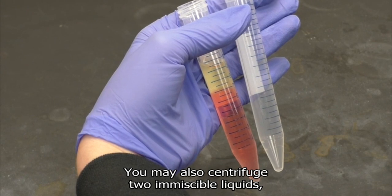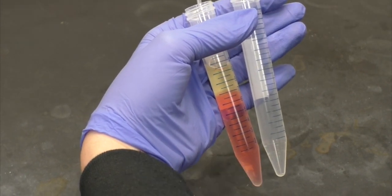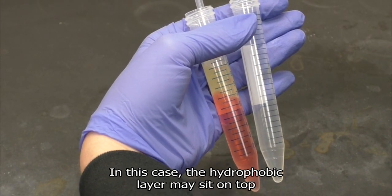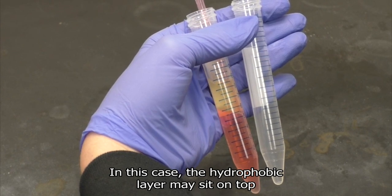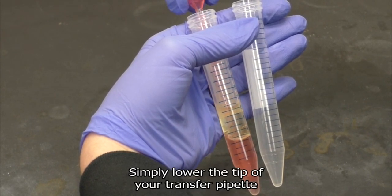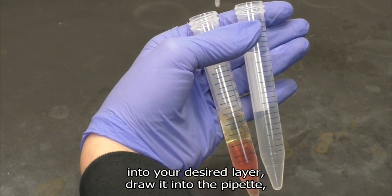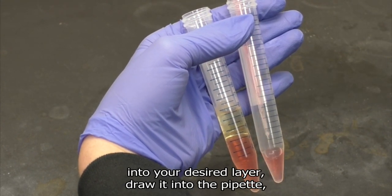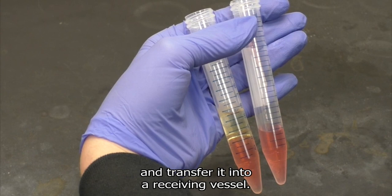You may also centrifuge two immiscible liquids such as oil and water. In this case, the hydrophobic layer may sit on top of your desired liquid. Simply lower the tip of your transfer pipette into your desired layer, draw it into the pipette, and transfer it into a receiving vessel.